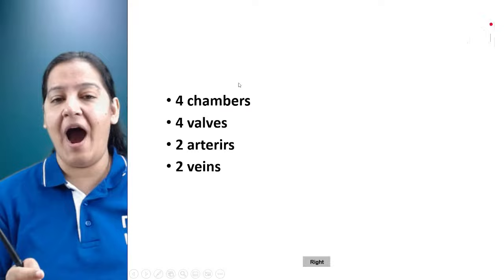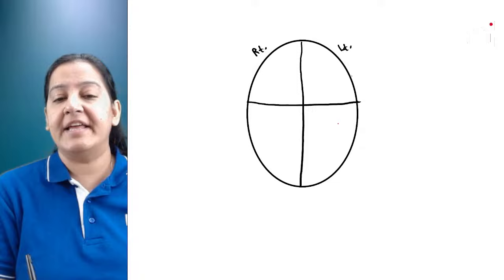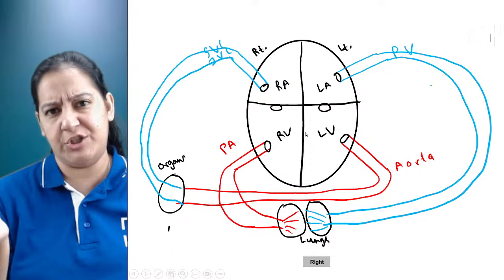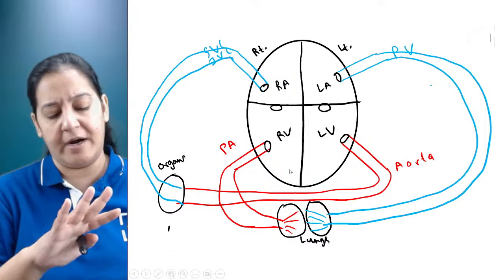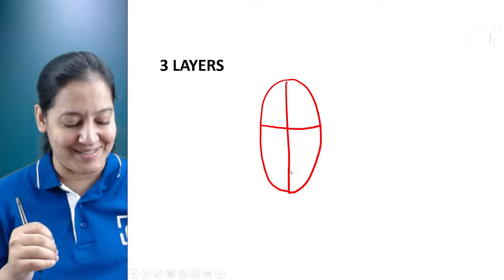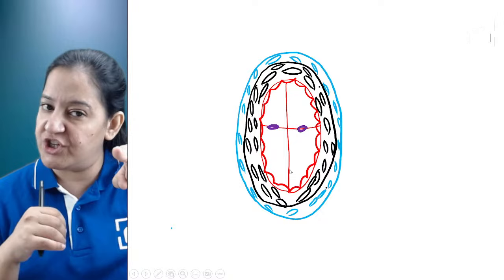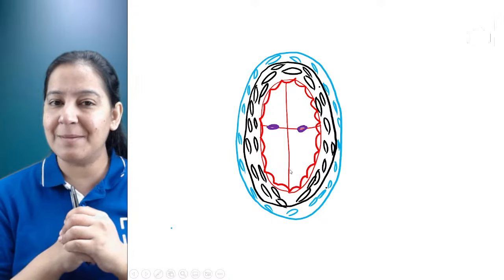Let me start the session. The heart has four chambers — two auricles and two ventricles — and two valves: the mitral valve and the tricuspid valve. We also have two arteries and two veins. In the heart there are three layers: the innermost is the endocardium (shown in red), the middle is the myocardium (shown in black), and the outermost is the pericardium (shown in blue).